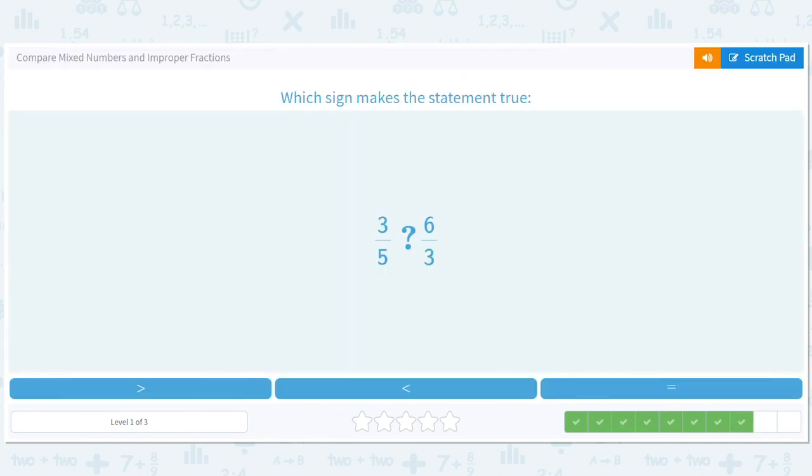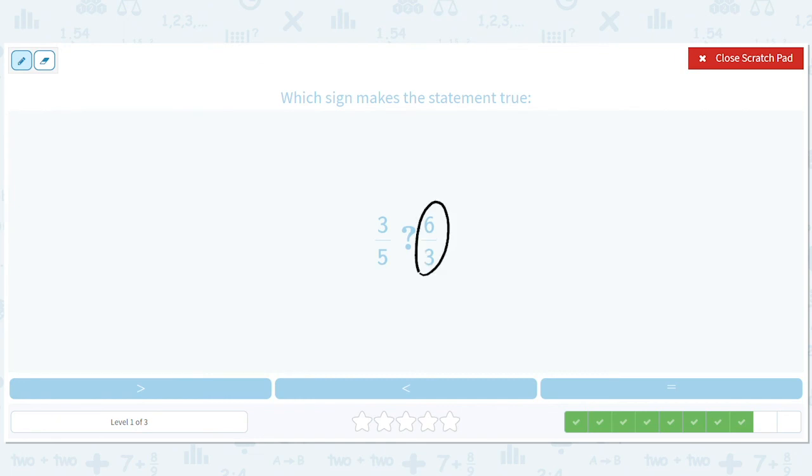Three-fifths or six-thirds? Okay, this is not hard, right? Six-thirds is two. That's a whole number. And three-fifths is less than one, right? So this is definitely three-fifths is less than two.